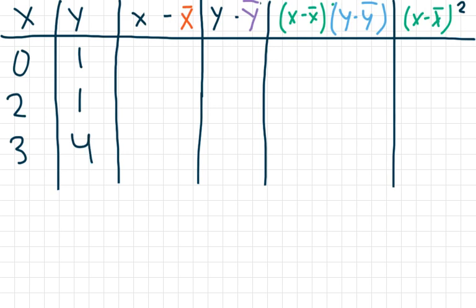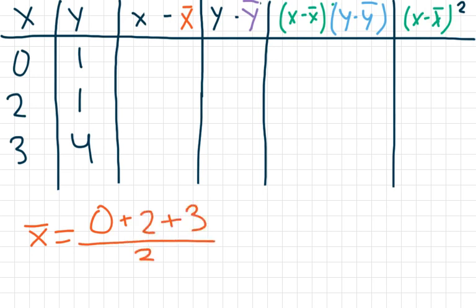Now we're going to subtract each x value minus the mean x value. To do that, we need to find the mean x value. The mean x equals zero plus two plus three, divided by the number of values we have, which is three. That's five divided by three, so the mean x value is five thirds.